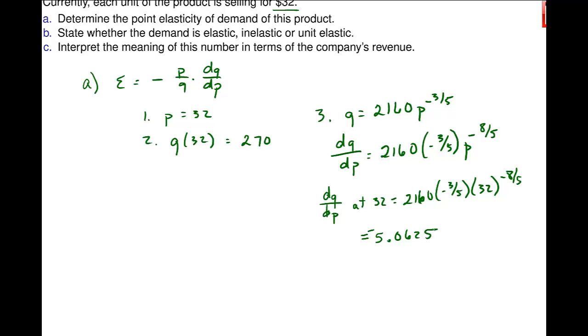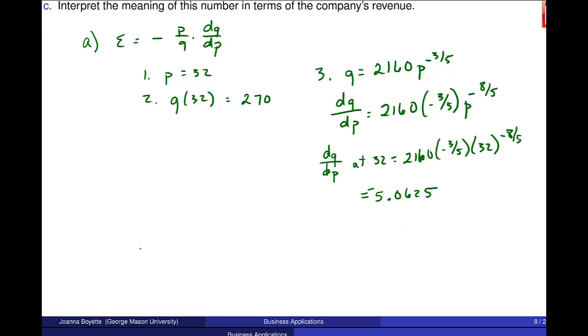Negative 3/5 times p to the minus - negative 3/5 minus 1 is minus 8/5. Then I plug in dq/dp at 32 is negative 5.0625. So now point elasticity, the actual elasticity: negative 32 over 270 times negative 5.0625, and I get that's 0.6.